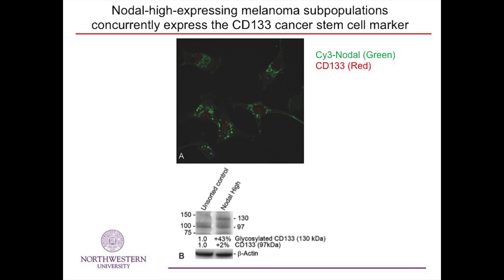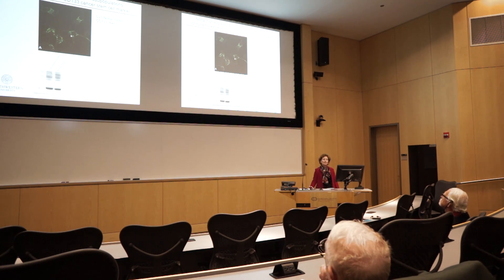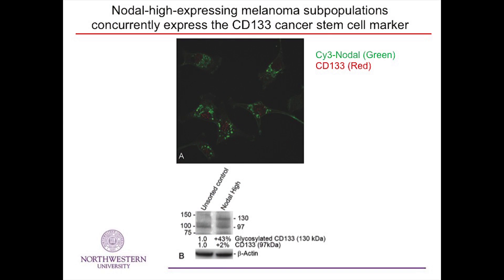We can take nodal high-expressing cells and look at the expression of nodal, shown in green by confocal microscopy, in relation to CD133, which is a prominent cancer stem cell associated marker shown in red. This is the first time we've been able to look at live cells not only expressing nodal, but learning that they also express the cancer stem cell marker CD133. These data are validated by western blot analysis showing that nodal high-expressing cells do express CD133, while unsorted control cells do not.